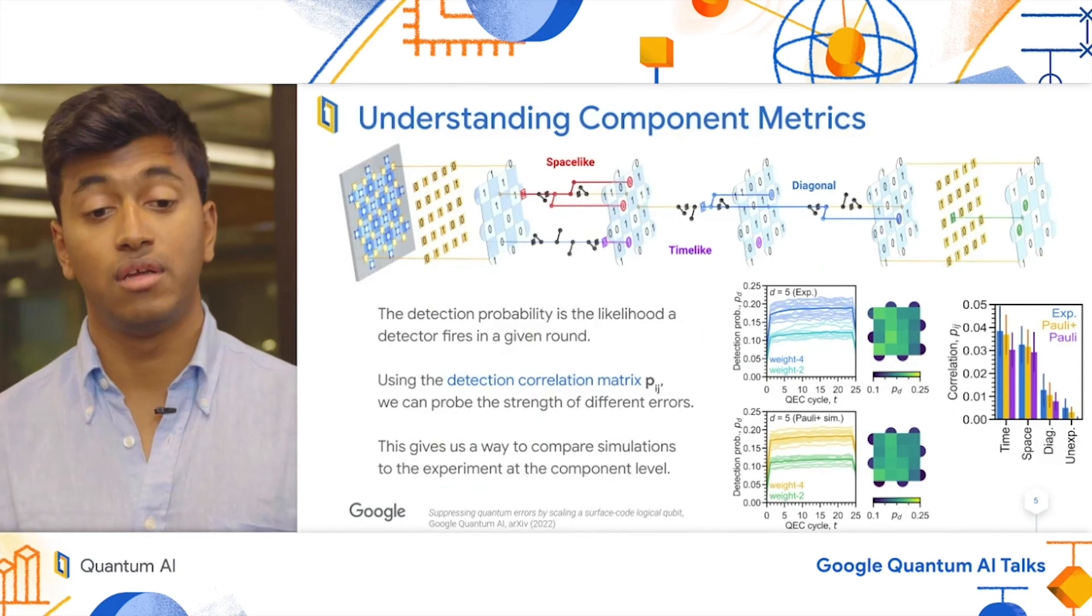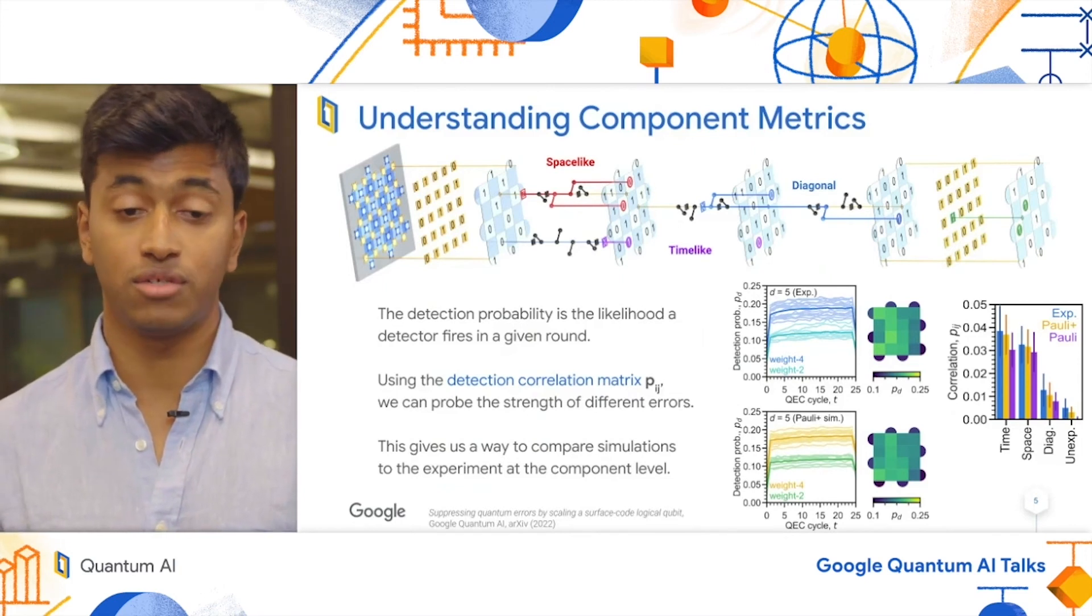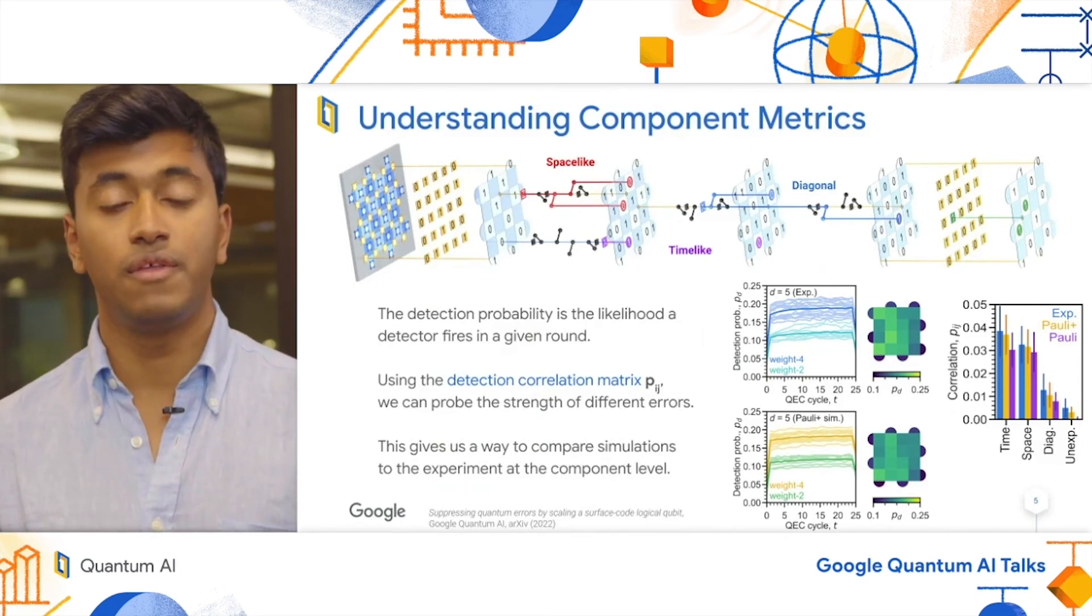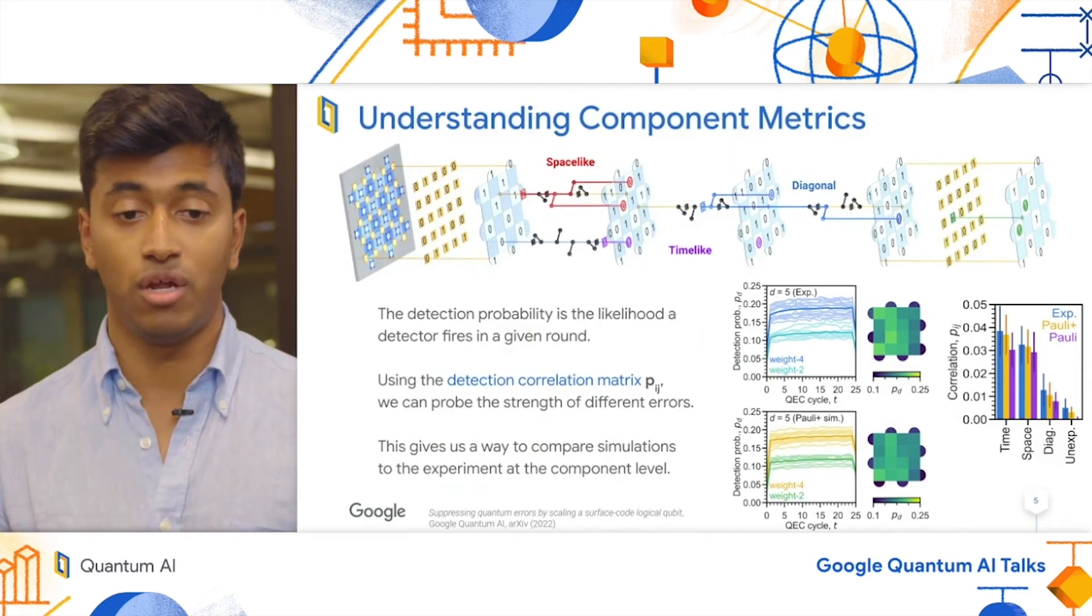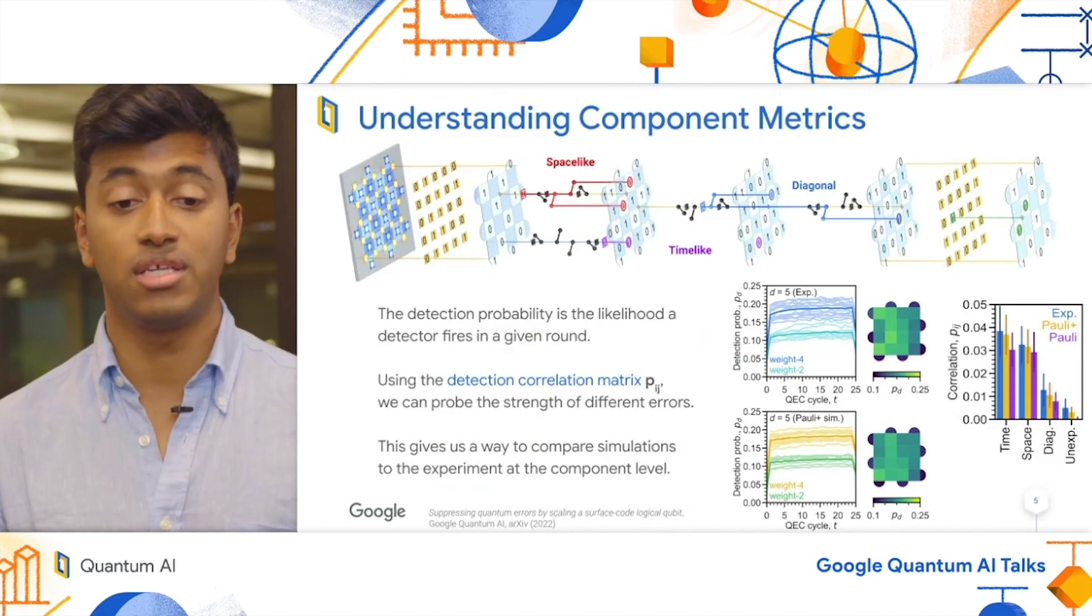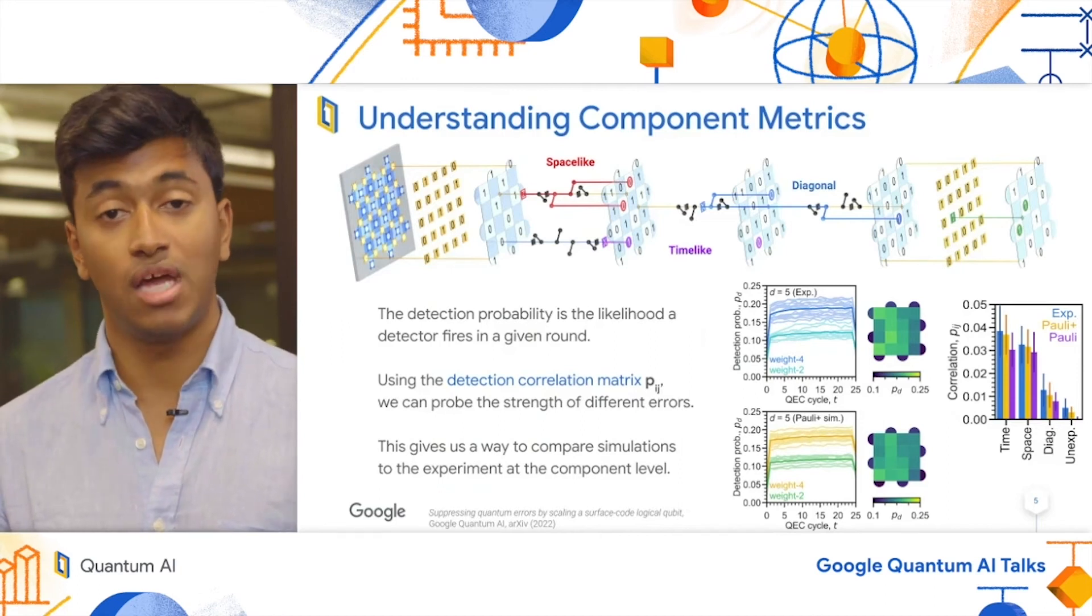We now want to discuss the PIJ detection correlation matrix. In this matrix, we're looking at the correlation between the likelihood that different detectors fire in the same run. And we've categorized these errors into three types, space-like, time-like, and diagonal.